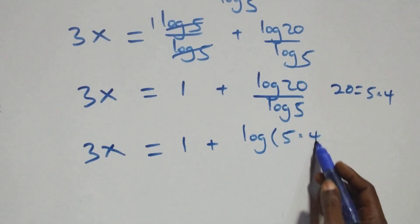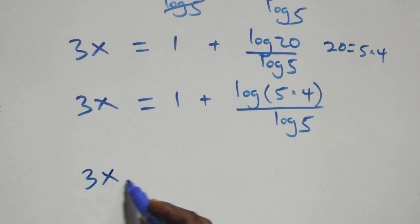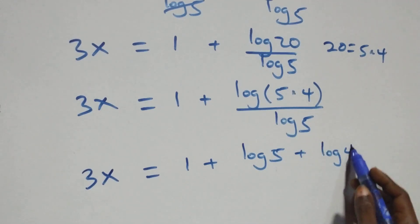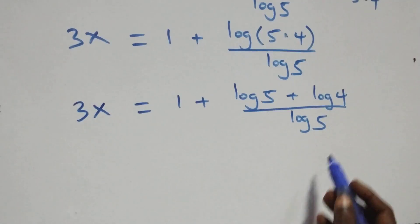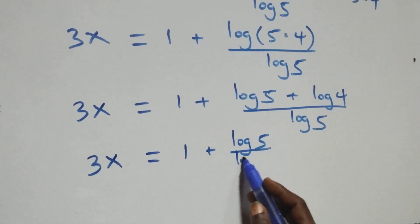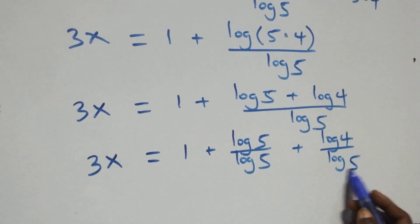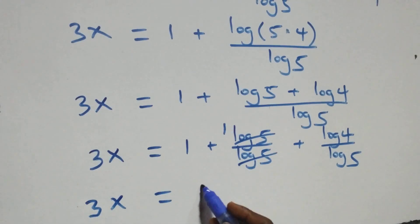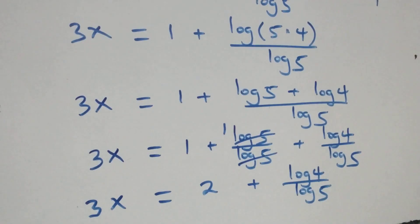This becomes 3x equals 1 plus log 20 over log 5. We can also write 20 as 5 times 4, giving log of 5 times 4 over log 5. Applying the law of logarithm again: 3x equals 1 plus log 5 plus log 4 over log 5. Log 5 cancels each other leaving one, so 3x equals 1 plus 1 plus log 4 over log 5, which gives 3x equals 2 plus log 4 over log 5.